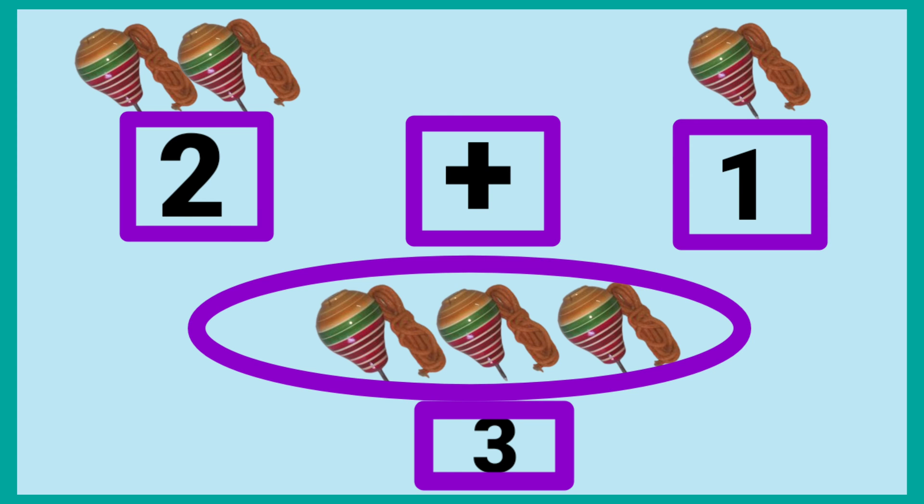Two tops and one top makes three tops. Means two plus one is equal to three. Two plus one is equal to three.